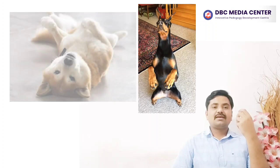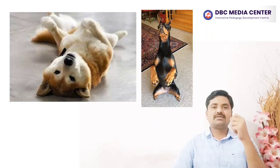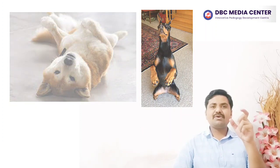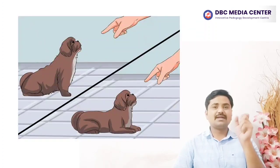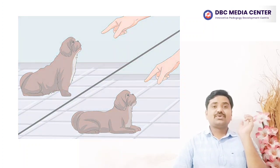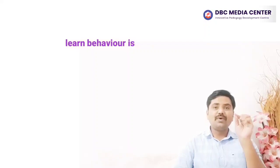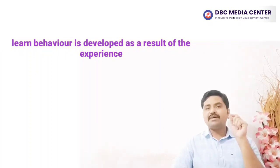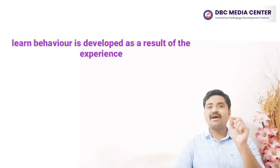If you own a dog, you probably know that dogs can be trained to sit, beg, roll over, and more. These are examples of learned behavior, and dogs are capable of significant learning. By some estimates, a very clever dog has cognitive ability on par with a two-and-a-half-year-old human. In general, a learned behavior is one that an organism develops as a result of experience, contrasting with innate behaviors which are genetically hard-wired and can be performed without prior experience or training.